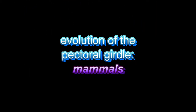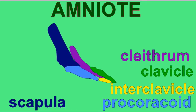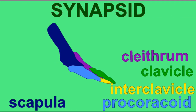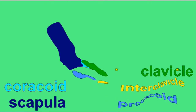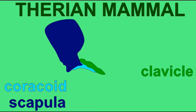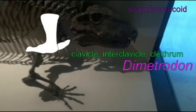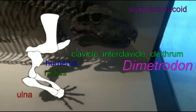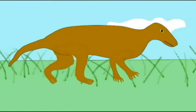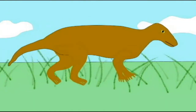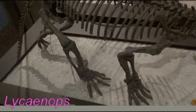As the pectoral girdle of synapsid reptiles evolved into the mammalian form, a number of modifications were made, such as the support of an upright stance as opposed to the sprawling posture of reptiles, the increase in size of the scapula, and the decrease in size of the clavicle and interclavicle. A second coracoid bone evolved, and this is the part which is retained as the coracoid process of the scapula in mammals today.